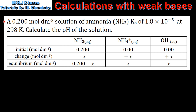Next we look at a calculation with a weak base. A 0.200 mol per decimetre cubed solution of ammonia, NH3, has a Kb of 1.8 times 10 to the negative 5 at 298 K. Calculate the pH of the solution. Once again we set up an ICE table with initial, change, and equilibrium concentrations. The initial concentration of ammonia is 0.200, and for the ammonium ion and the hydroxide ion they are both zero.